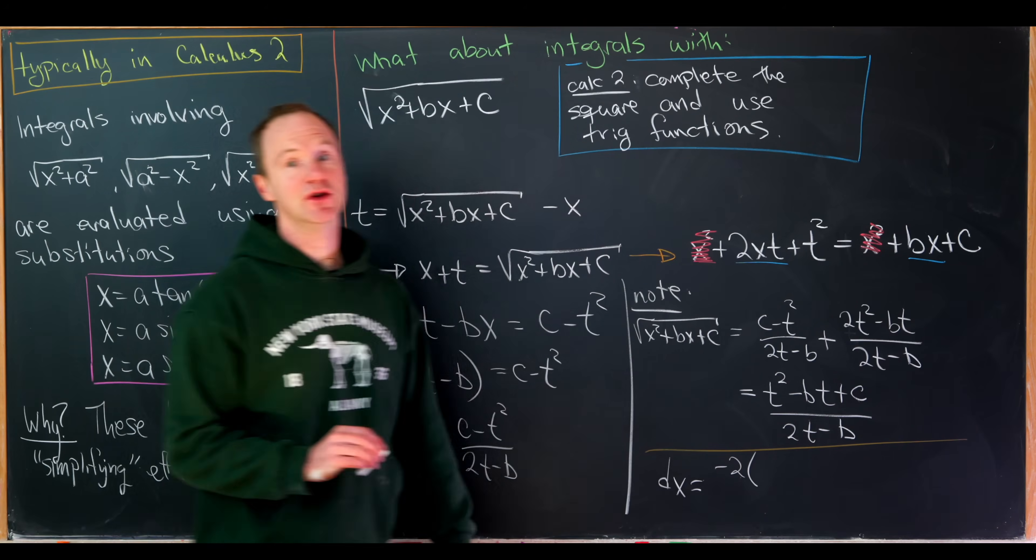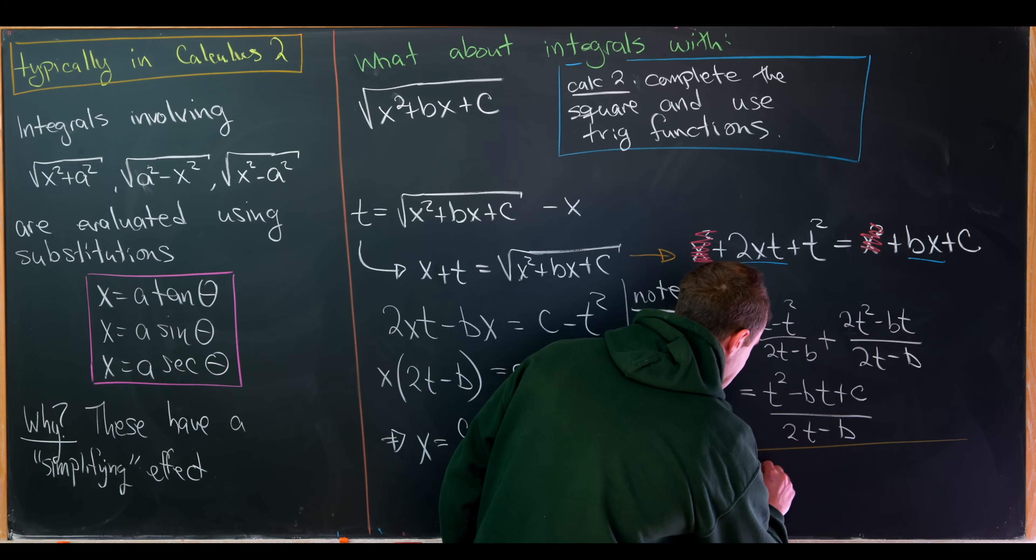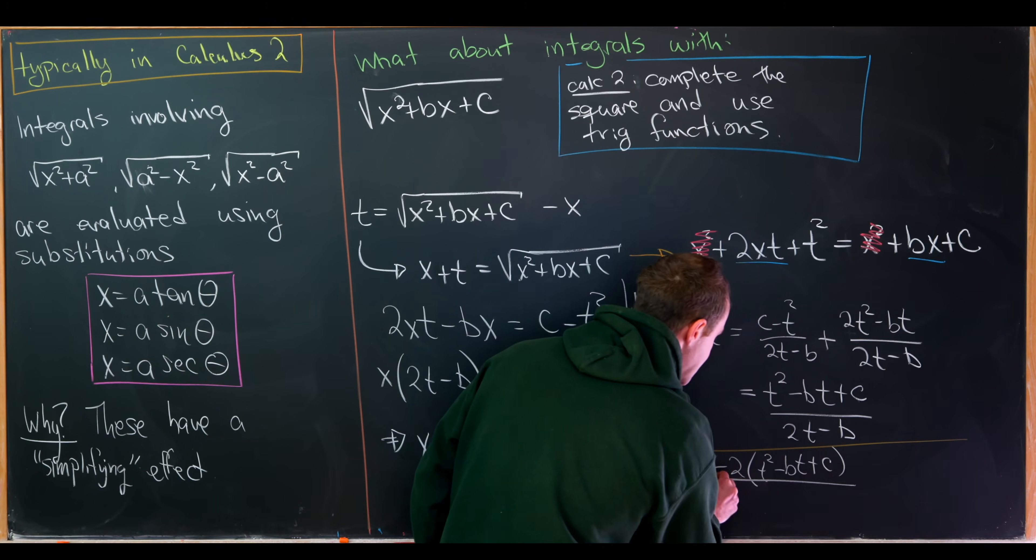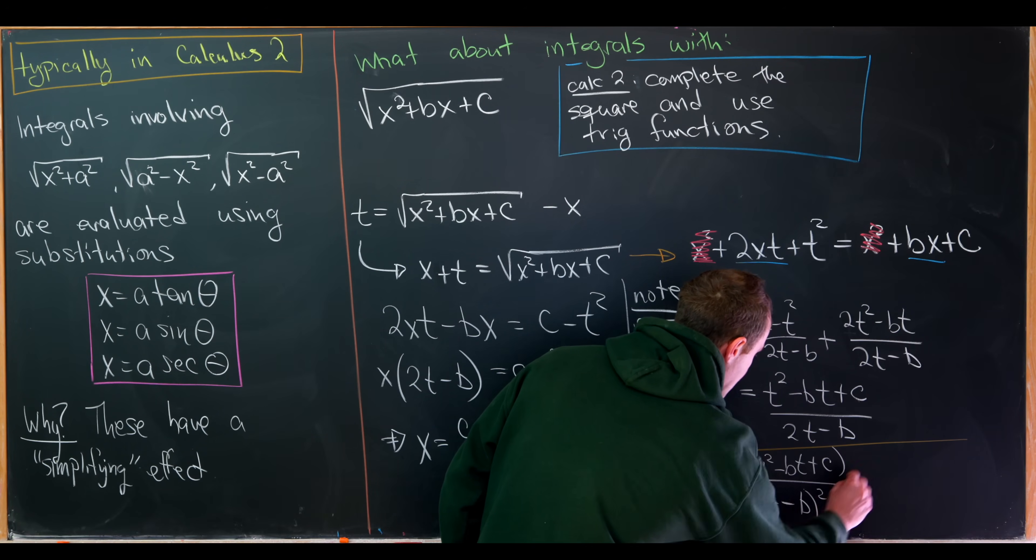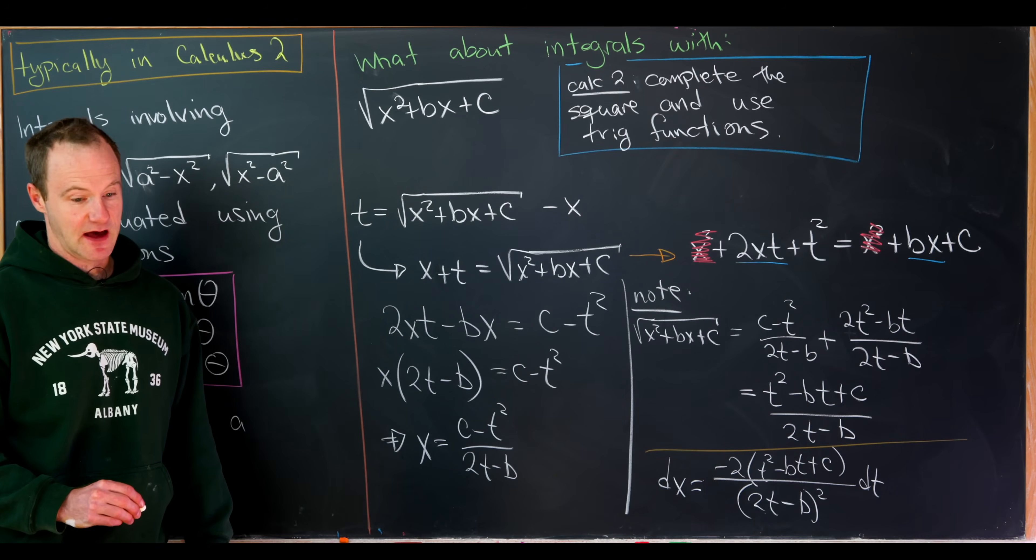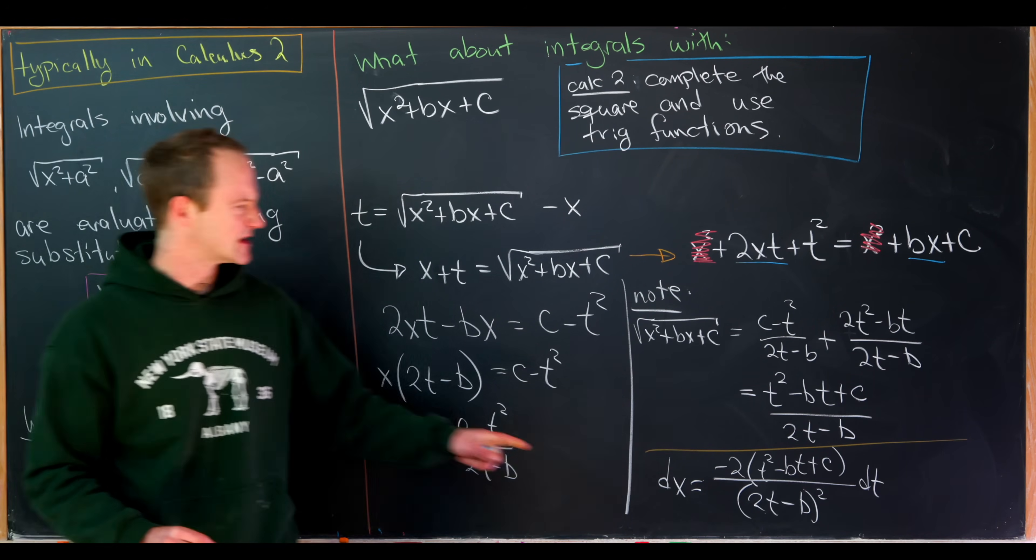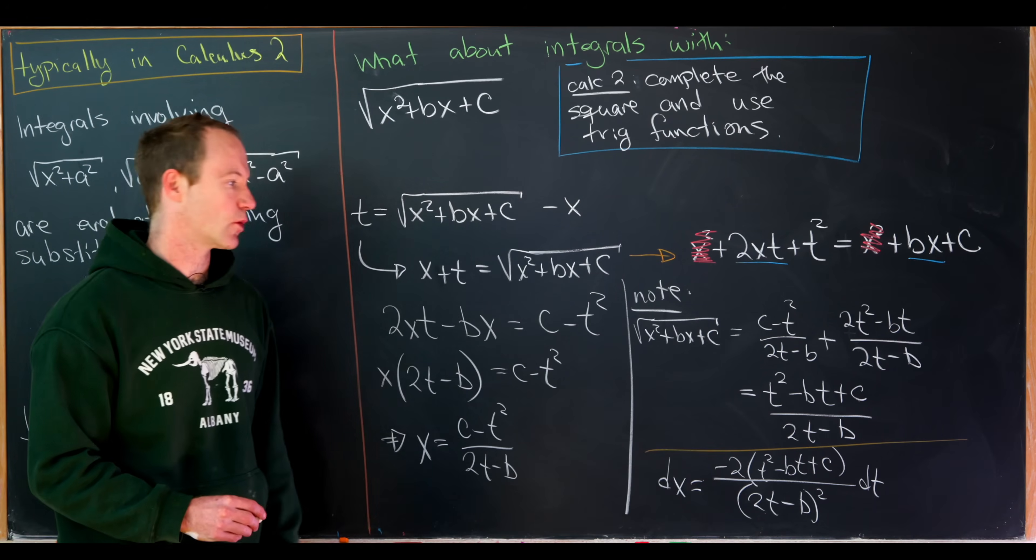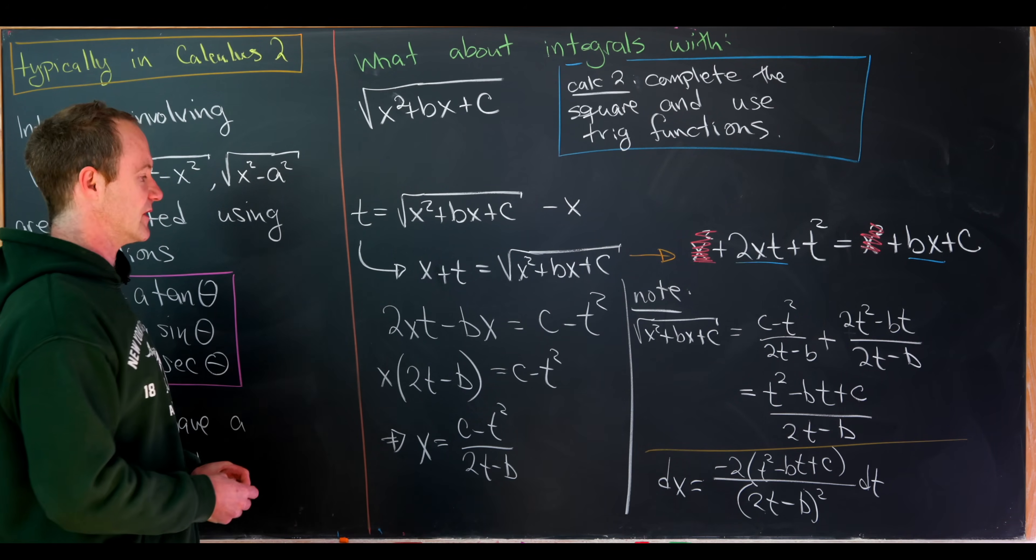But it ends up being the following. Minus 2 times t squared minus bt plus c over 2t minus b quantity squared dt. So we end up with something like that. So I think that's pretty interesting, because it's pretty similar to this square root. So let's look at a little bit of a summary at this point.